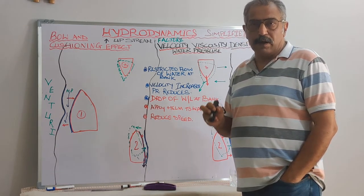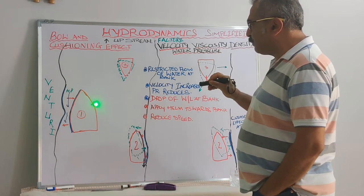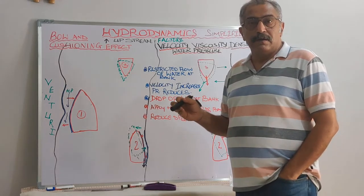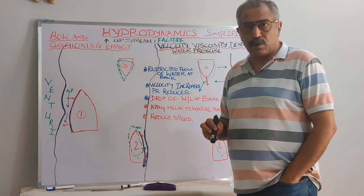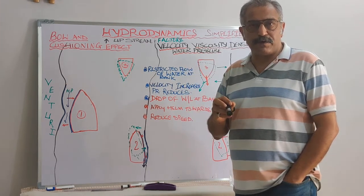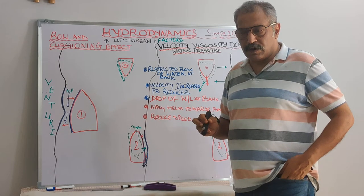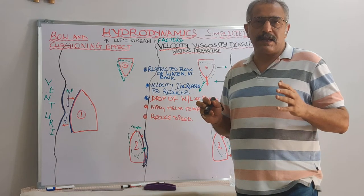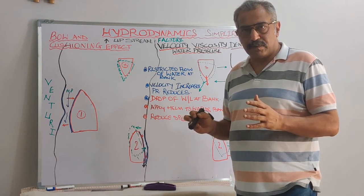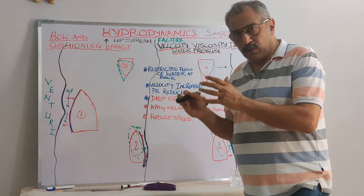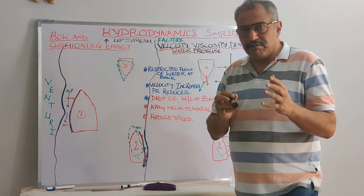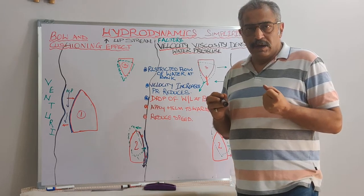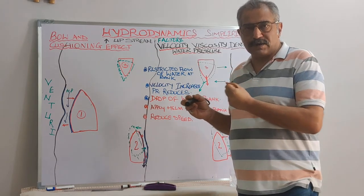Also, the governing factor is the speed, the speed of transit of these three vessels. More the speed, more the effect of squat and more the effect of cushioning and banking. Why? Because the water capacity in the channel is limited or restricted. The water to fill up the void will take some time and because of that, the vacuum will be created. Now we'll see how that works.